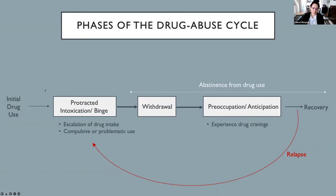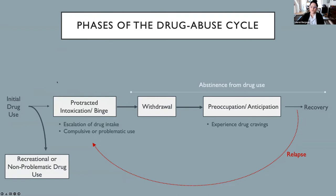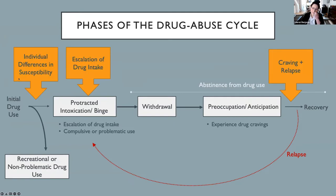Something important to highlight is that the majority of those who use drugs actually won't develop substance use disorders — many people can use drugs recreationally without a negative impact on their life. We need to understand why this is. My research aims to understand the mechanisms in the brain that underlie these individual differences in susceptibility to addiction, and to determine what signals drive the escalation of drug use and precipitation of craving. If we can develop a better understanding of what's happening in the brain at a sub-second timescale during drug use and cravings, we might be able to develop more efficacious therapeutic tools for relapse prevention.